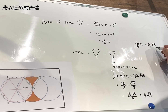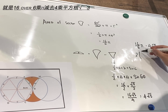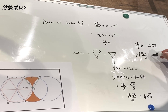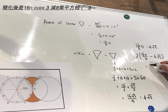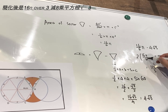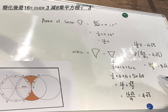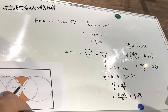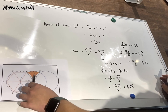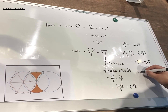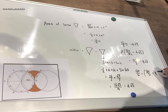To find both of the tiny sectors combined, we multiply by 2: 2 times (16π over 6 minus 4√3). Simplifying, we get 16π over 3 minus 8√3. Now to find the shaded region, we take the large sector — which is 16π over 6 — and subtract both tiny sector parts: minus (16π over 3 minus 8√3).